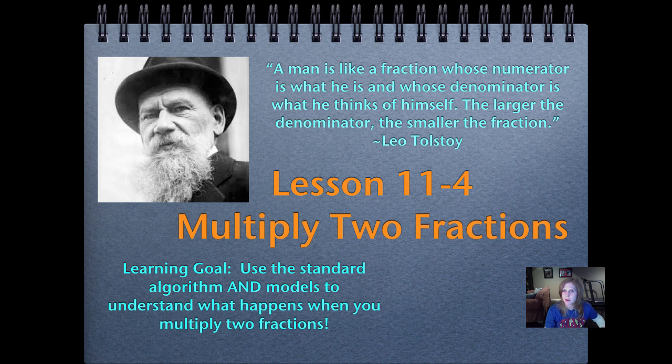Leo Tolstoy was one of the world's greatest novelists. He wrote realistic fiction and had some great ideas that really motivated Gandhi and Martin Luther King about nonviolent resistance. So we're talking about a writer who's writing using math to explain what he thinks about something.